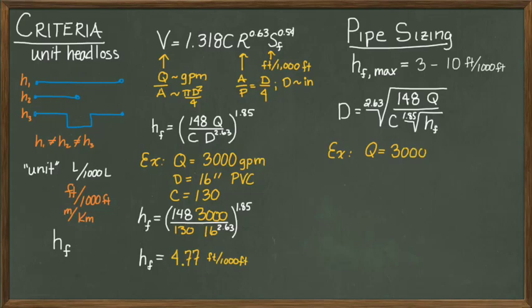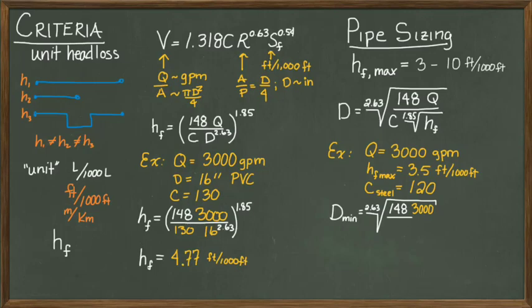Let's suppose we have the same 3,000 gallon per minute flow rate, but this time we don't know the pipe diameter. All we know is that we want to use steel pipe that has a C value of 120. Our new pipe cannot exceed 3.5 feet per 1,000 feet. Plugging in our given values into the equation, we can determine that the minimum diameter is 17.58 inches, which we then round up to 18 inches.